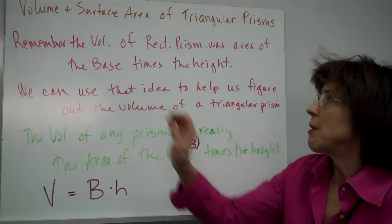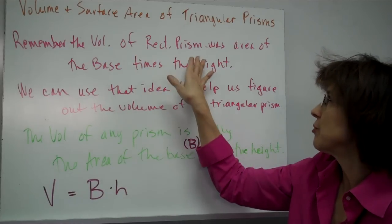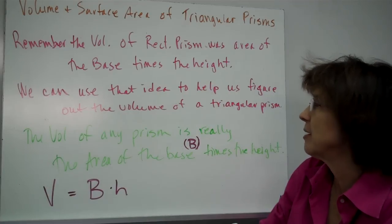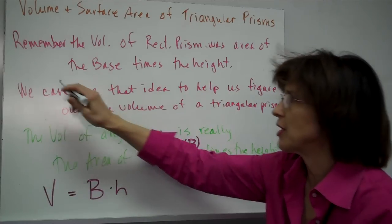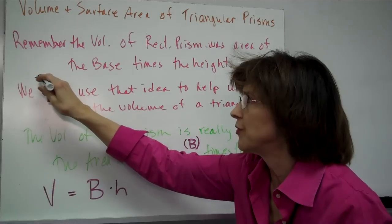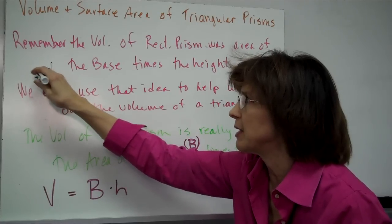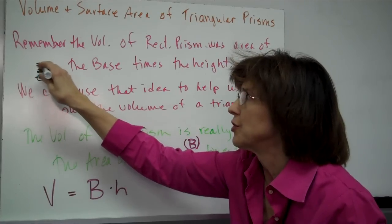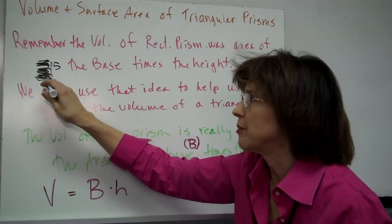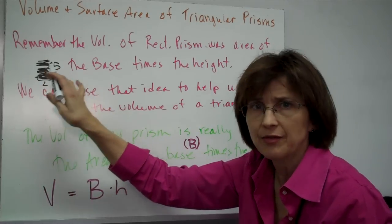Let's remember a few things. The volume of a rectangular prism was really just the area of the base times the height. Remember we talked about whatever the number of cubes you needed for the base, you just multiplied by how many layers you had. So if you had five layers and the area of the base was two by three — six — it would be six times five.